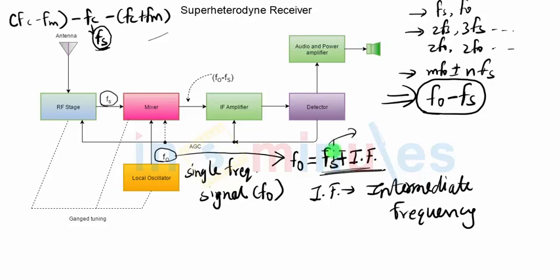Now how is that possible? How will the local oscillator have knowledge of what the received signal Fs is, so that it can generate frequency Fs plus IF? That will be possible by synchronizing the capacitance of the local oscillator with the tuning capacitor of the bandpass filter of the RF stage.